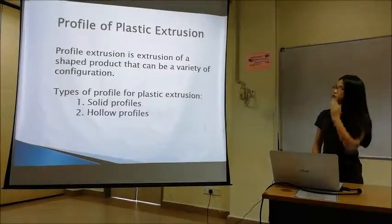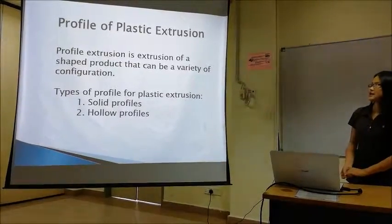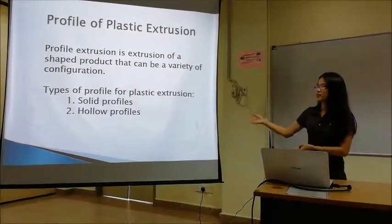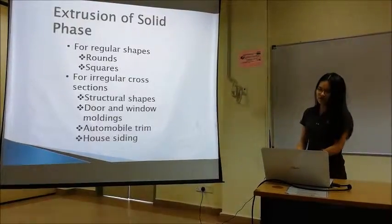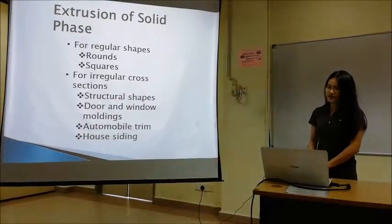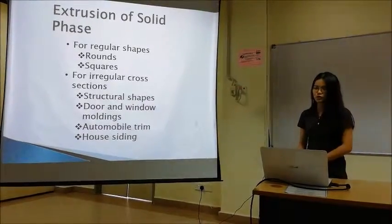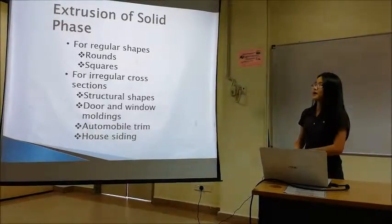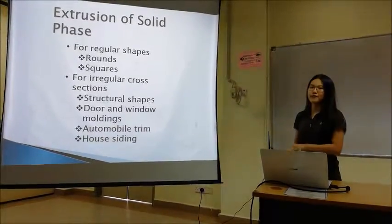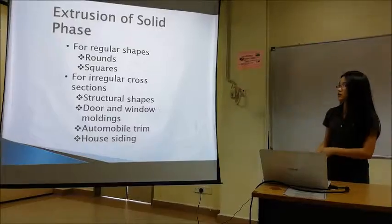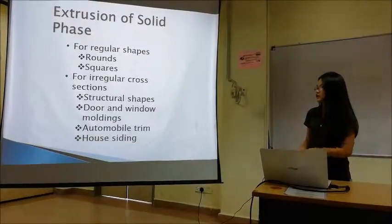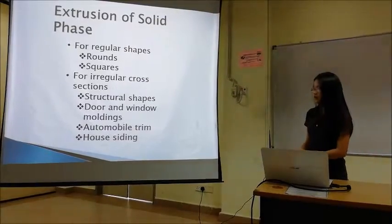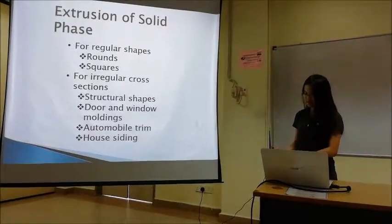There are two types of profiles for plastic extrusion: solid profile and hollow profile. For solid profile, it can be separated into two parts: regular and irregular. Regular parts can be made as round and square shapes. Irregular parts include structural straps, door and window moldings, automobile frames, and house siding.